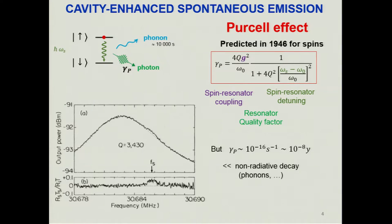For the nuclear spin system of chlorine atoms, the Purcell rate corresponded to a spin lifetime due to photon emission into the resonator of the order of 100 million years — much longer than the non-radiative decay. I would like to show an experiment performed in our group by Patrice Berthe and Audrey Bienfait in the last few years, not on nuclear spins but on electronic spins, which really demonstrates this effect.